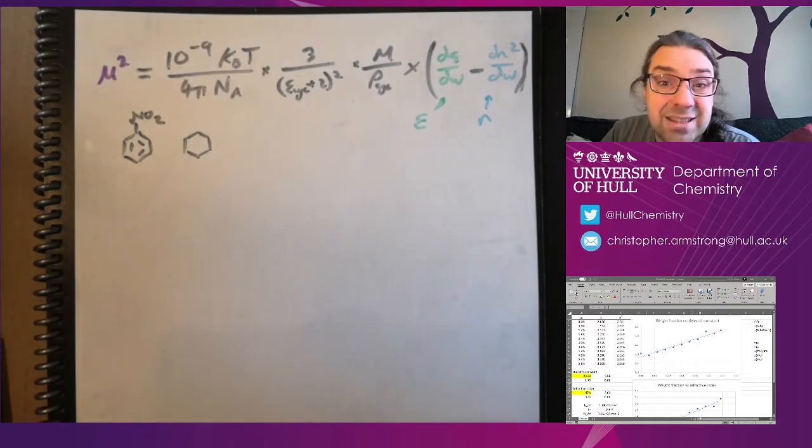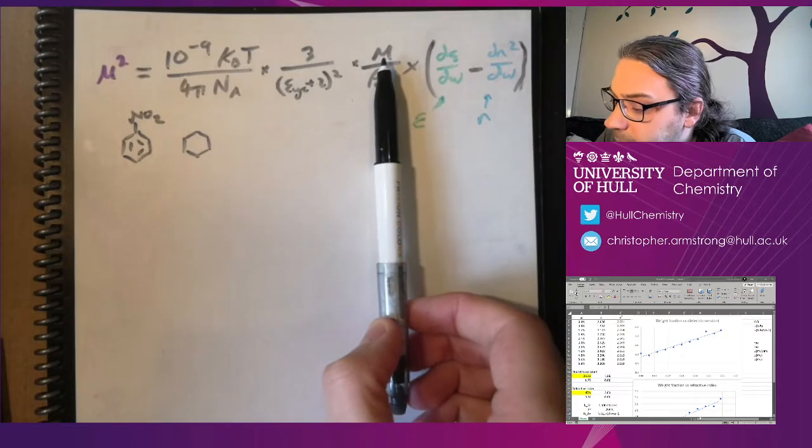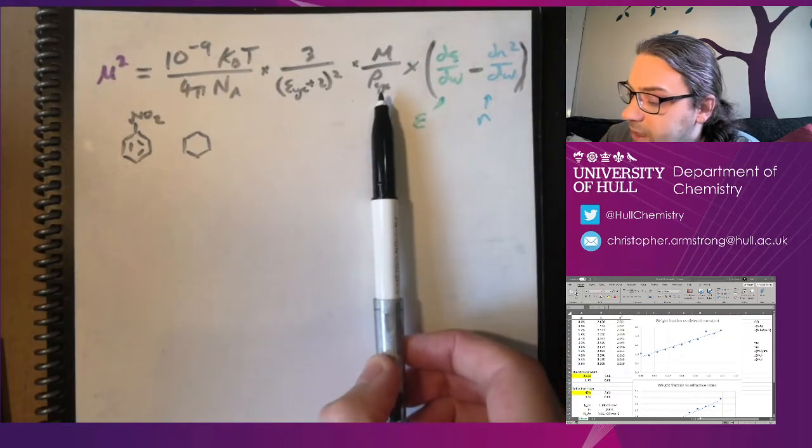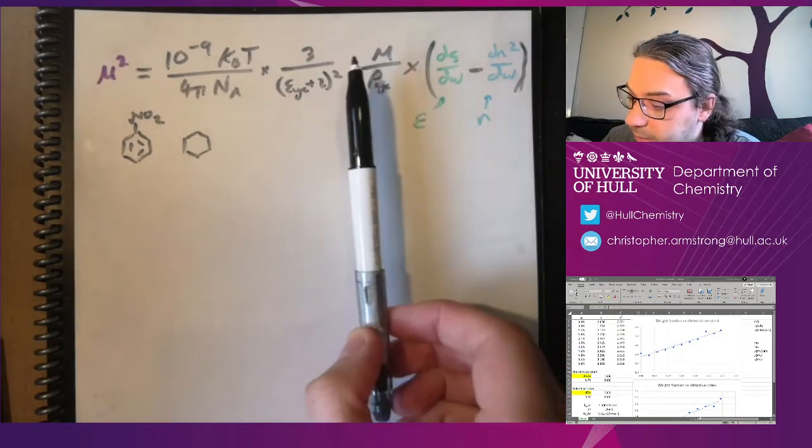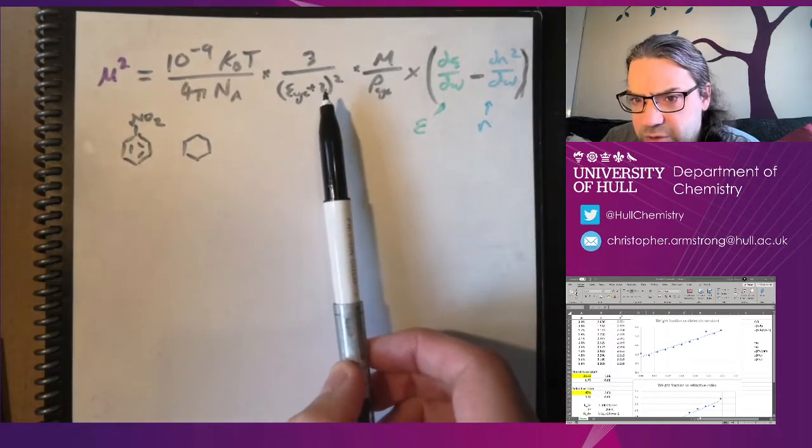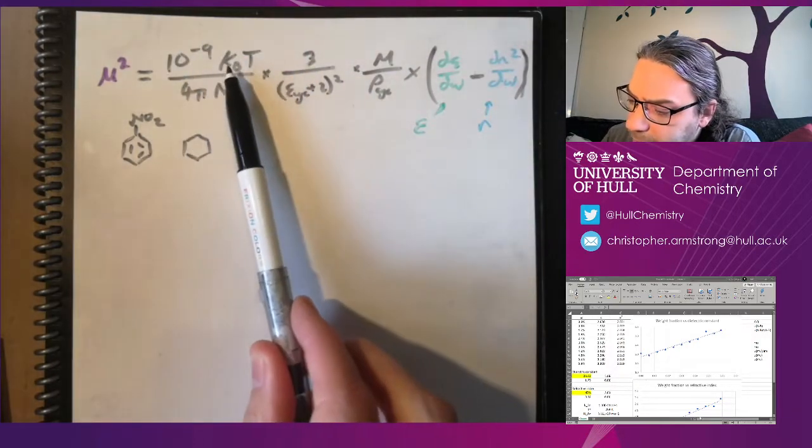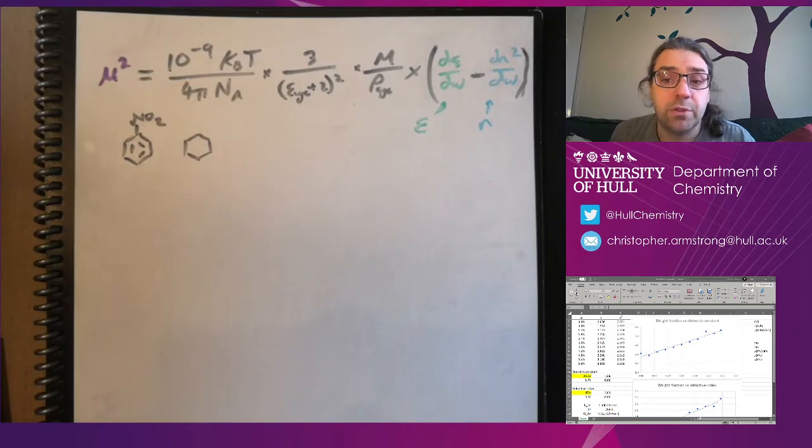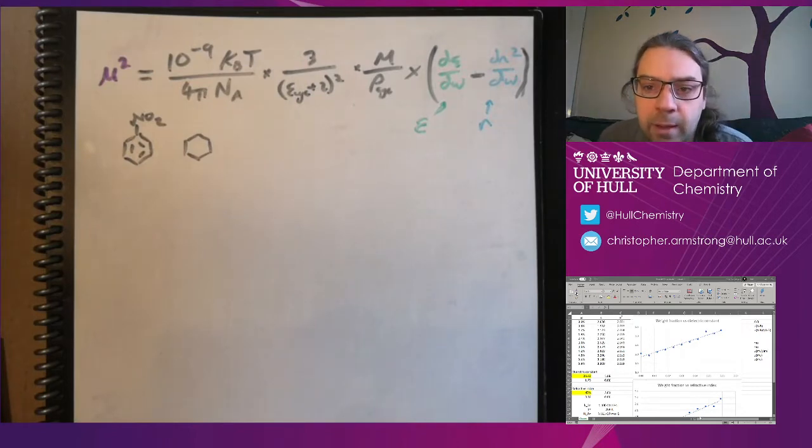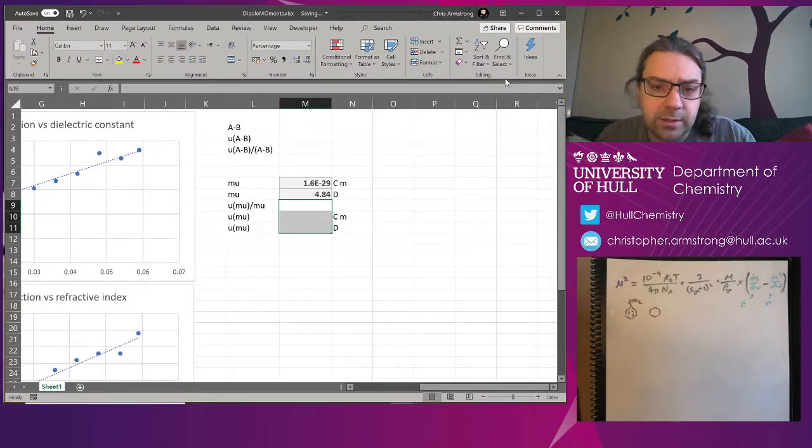So what else is in this equation? Well, we've got the raw data here, and we've got the molar mass and the density of the solvent. And then we've got the relative permittivity of the solvent, plus two squared. Why? I don't know. I didn't really read the paper for this. The Boltzmann constant, the temperature, and Avogadro's number. So quite a few bits and pieces going in there and working out. And we bung that all in, we get the result. So I've got this in Excel. Let's go have a look at it now.